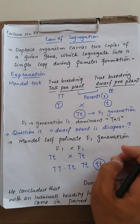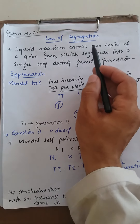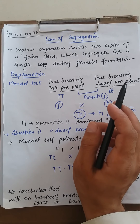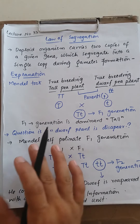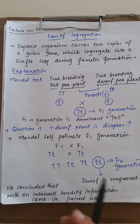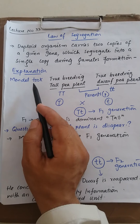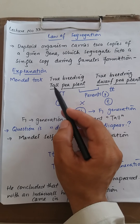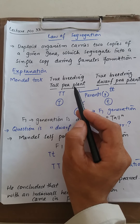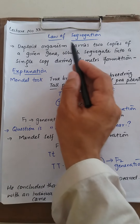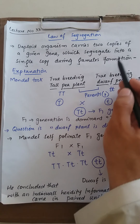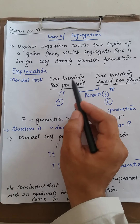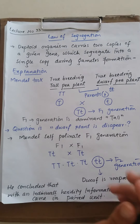To explain this statement, Mendel took a true breeding tall plant. True breeding ka matlab yeh hai ke agar tall true breeding hai, toh tall hi offspring produce karega.